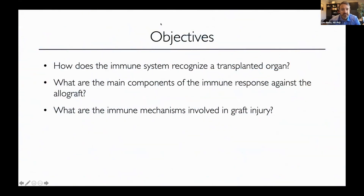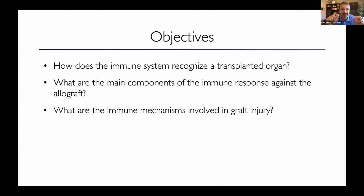Good morning, good afternoon, good evening, dear colleagues, depending upon where you are. The three main objectives for the next 40 minutes is to answer three basic questions: How does the immune system recognize a transplanted organ? What are the main components of the immune system that drive the alloimmune response? And what are the specific mechanisms of injury that lead to allograft failure, ultimately?